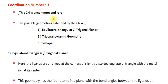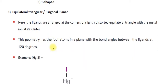Coordination number 3 is uncommon and rare. The possible geometries exhibited by coordination number 3 are: trigonal planar (also called diagonal planar), trigonal pyramidal geometry, and T-shaped geometry. These three geometries are explained below.